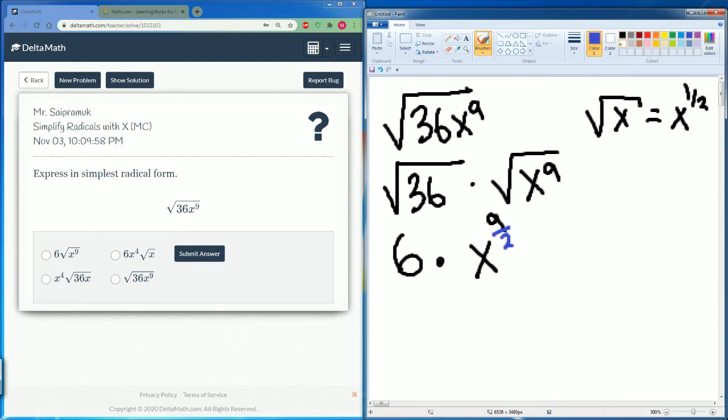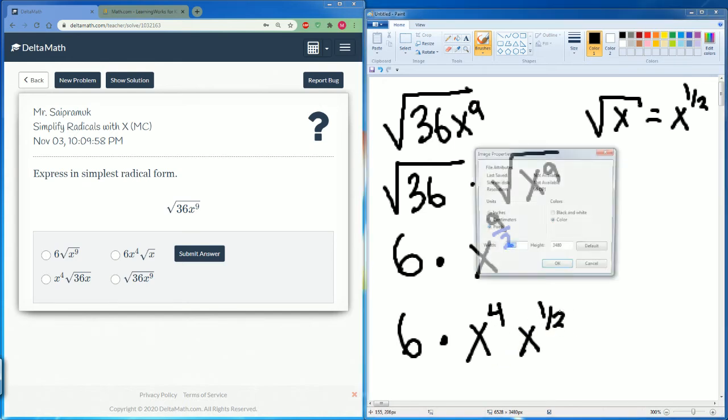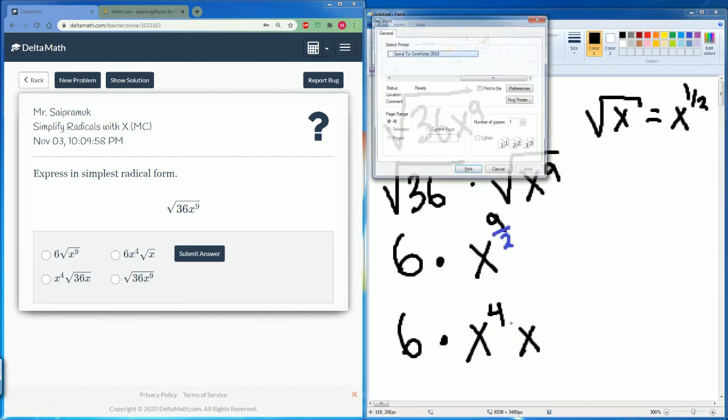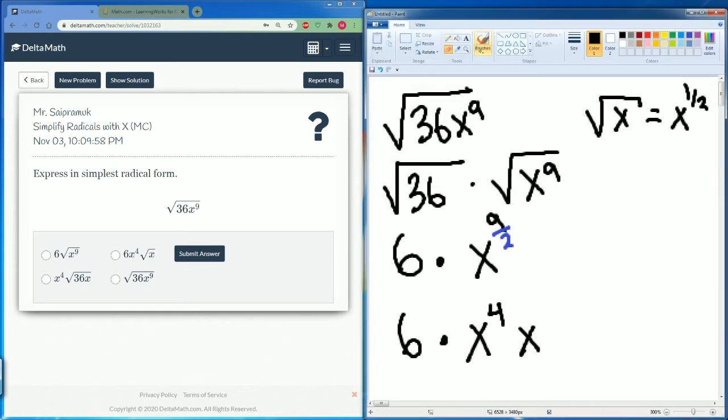x to the nine over one can be reduced into x to the four and x to the one-half. So you can pull this out so it is 6x to the fourth power, and this is the square root, the power one-half, so you can now rewrite this as just radical x.